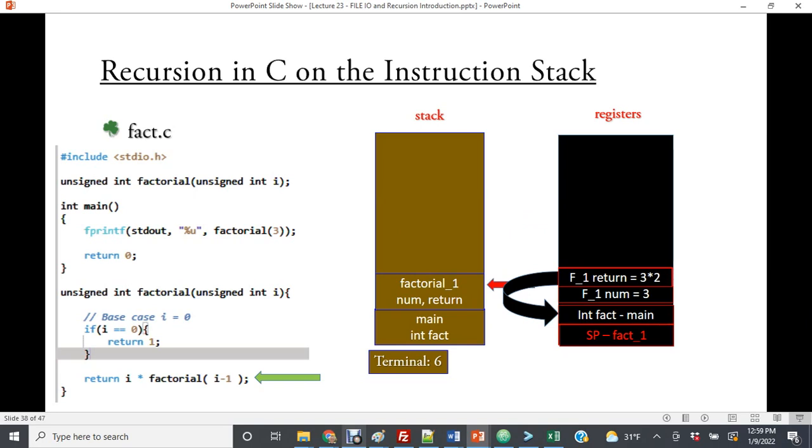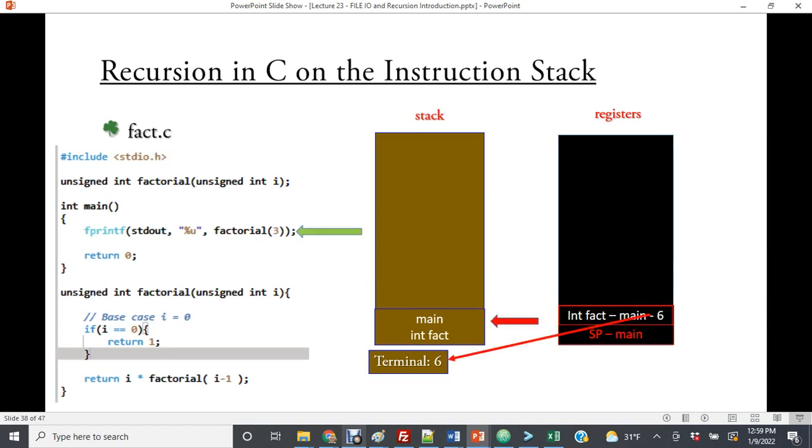Each time, the calls and registers are being deallocated. And then finally, in main, we get the value 6.